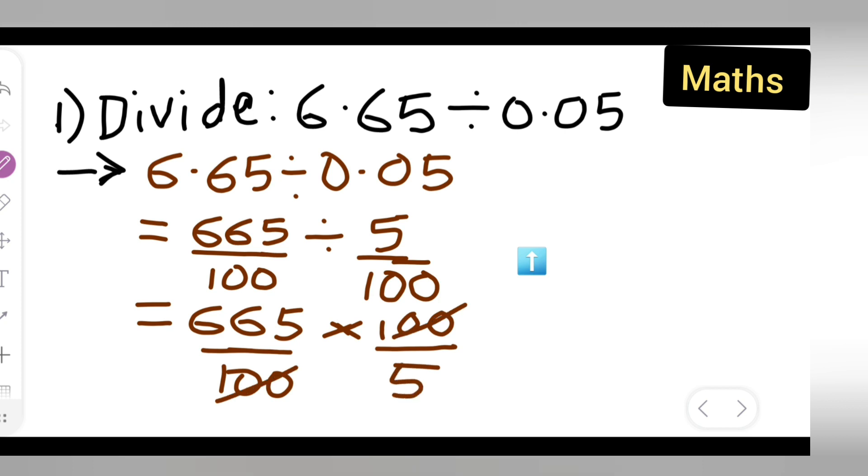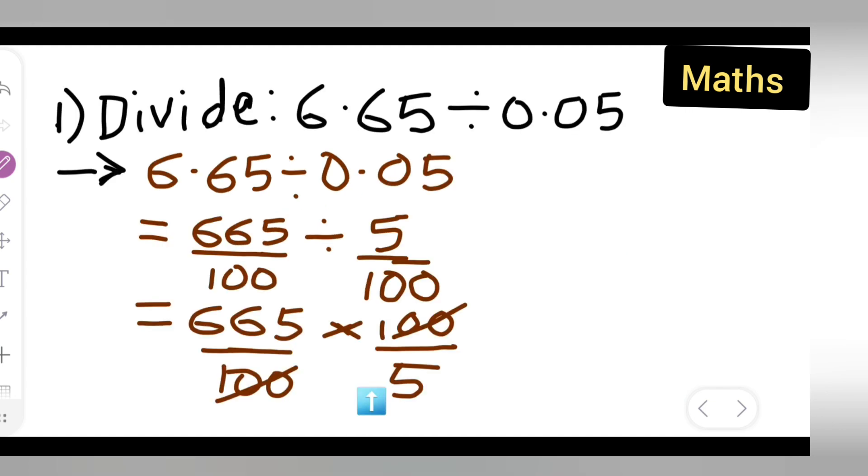Now here 100 and 100 will get cancelled. What remains is 665 upon 5. So write down 665 upon 5.